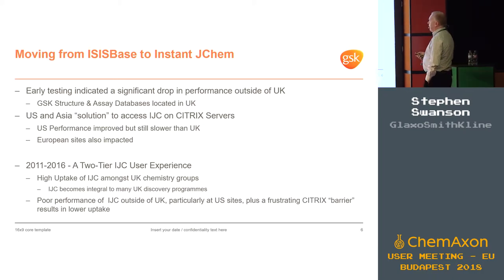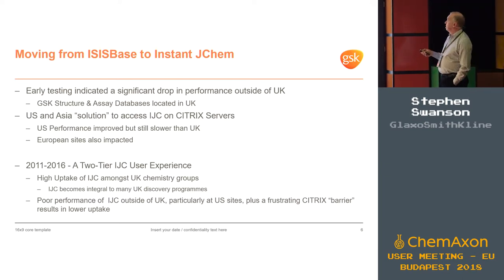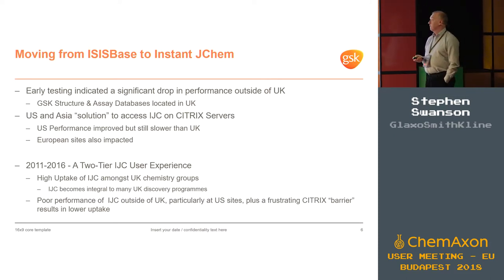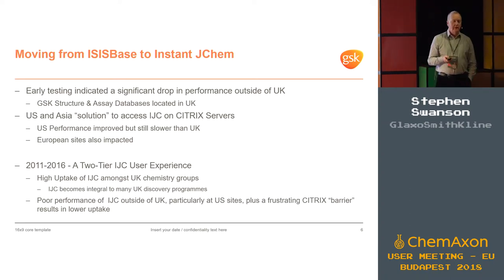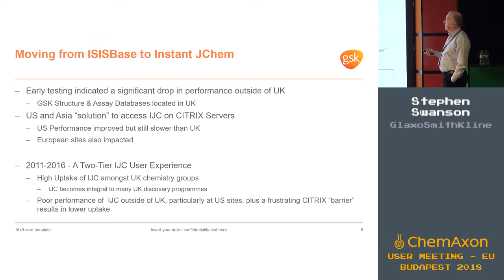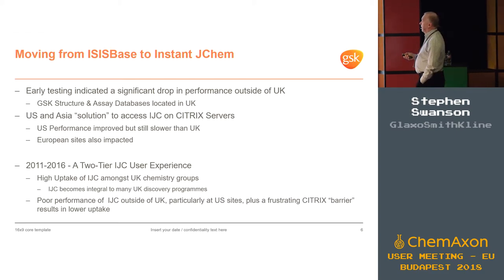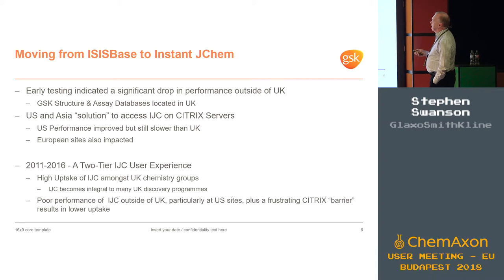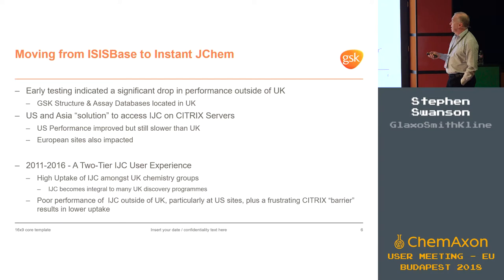However, and this is what I talked about six years ago — when we started running tests on Instant JChem we discovered there was a huge drop in performance once we moved outside the UK. The structure and assay databases are about 150 yards from where I sit, so I get pretty good performance. But once you go across the Atlantic — and even as far as France — performance still fell down. China had the problem as well. So they decided to implement Citrix servers, and you had to access through Citrix anywhere outside the UK.